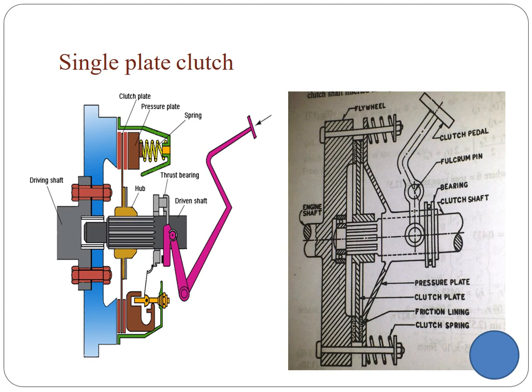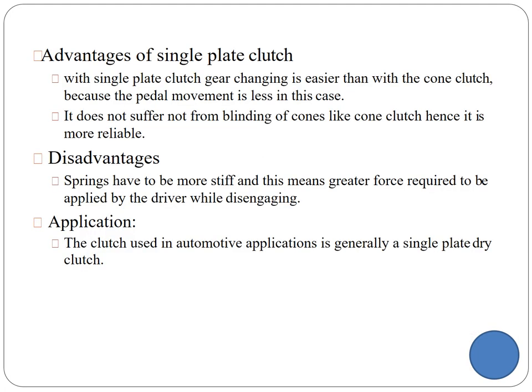A multi-plate clutch requires three or more disc plates. The advantages of the single plate clutch are that it is easier than the cone clutch, it has good gear-changing arrangements with pedal operation, and it is more reliable since it is not made in a cone-like structure. The springs must be stiff, as they are placed circumferentially and are important for engaging, disengaging, and force transfer. Almost all automotive applications use the single plate clutch.